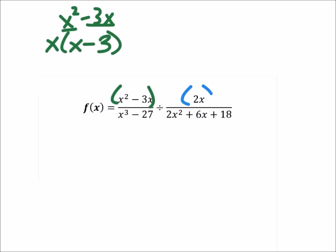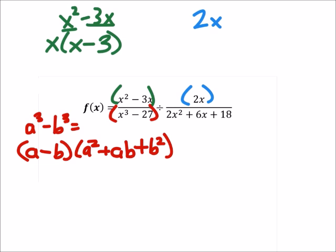Now let's look at the 2x. The 2x can't be simplified any further or factored in any way, so it's just going to remain 2x. When we look at x cubed minus 27, this is a difference of cubes problem. So, in other words, we have a cubed minus b cubed equals a minus b times the quantity a squared plus ab plus b squared.